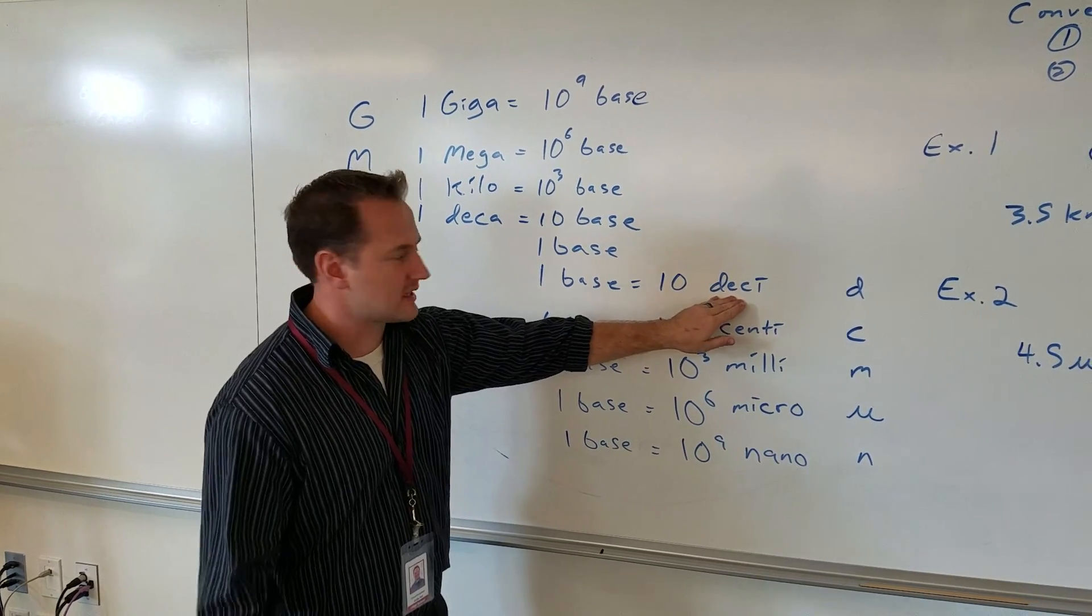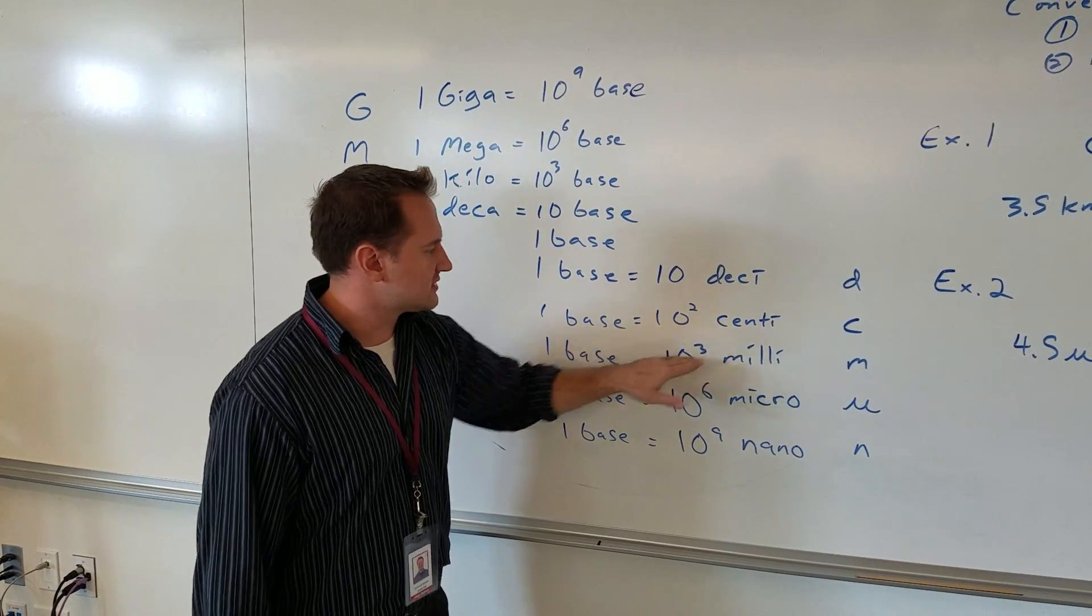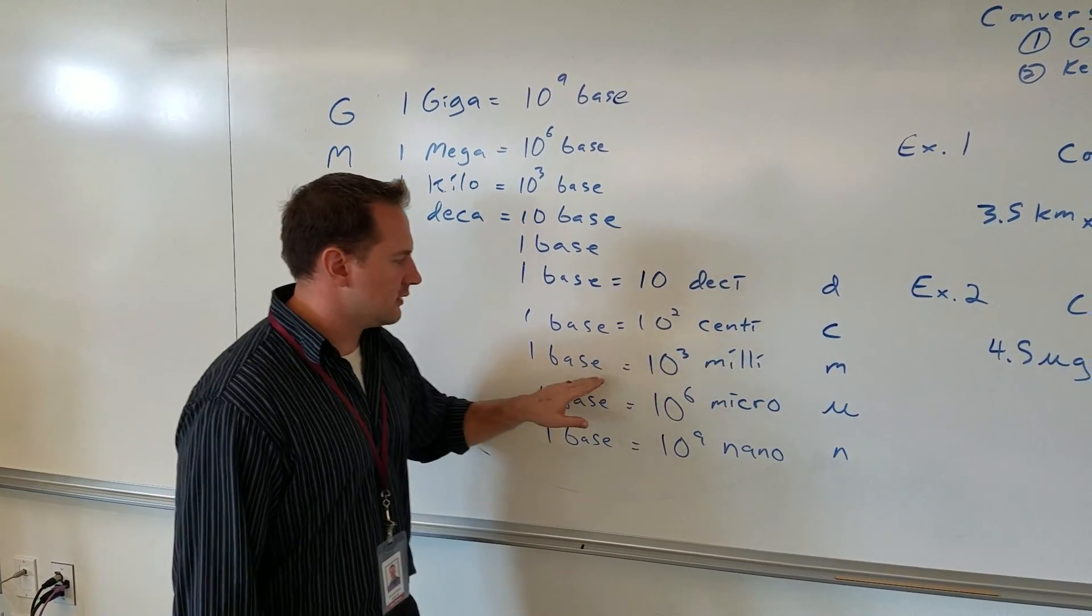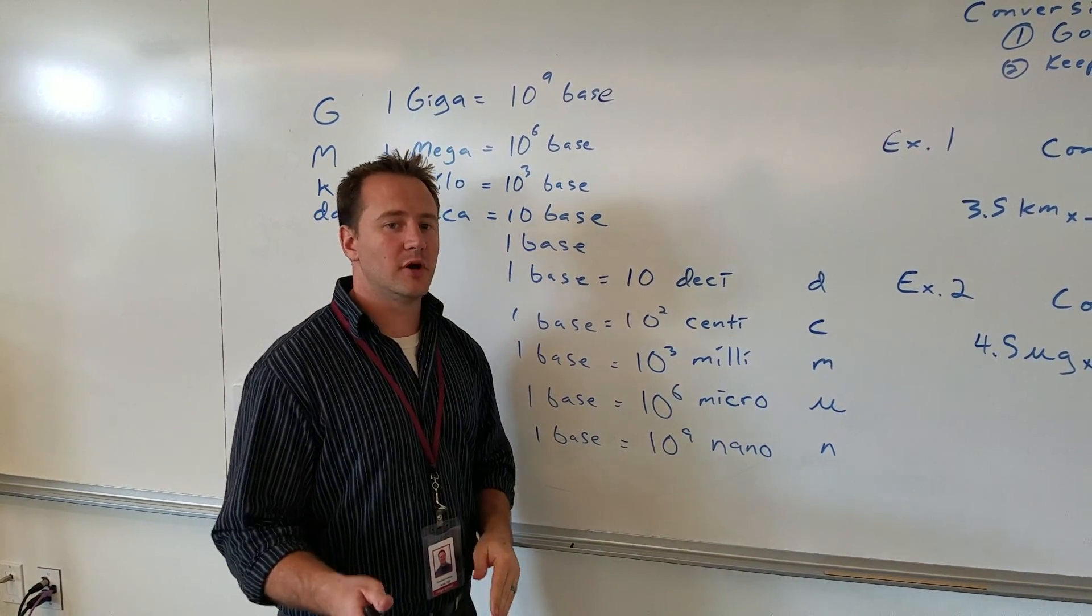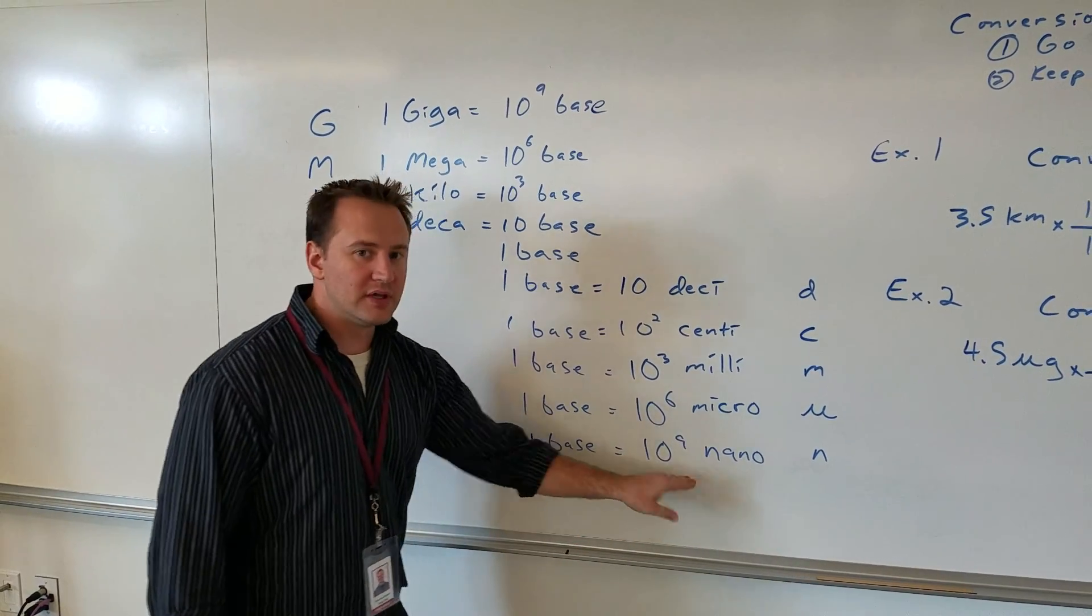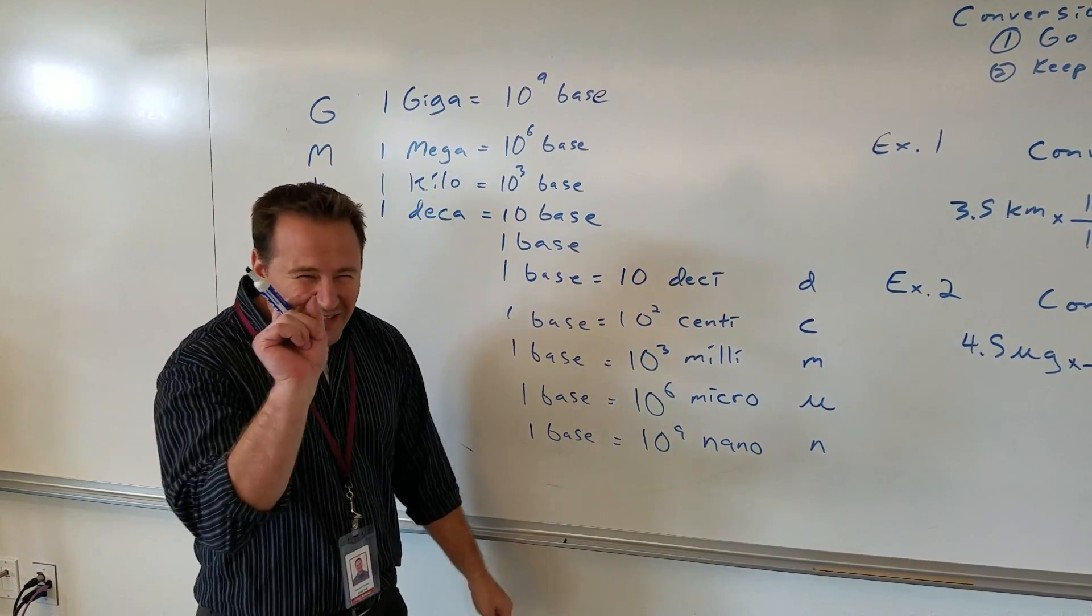If we're talking about decimeters, there are 10 of those in a meter. There's 100 centimeters in a meter, a thousand millimeters in a meter, a million micrometers in a meter, and the smallest you need to know is nanometers, which there are a billion nanometers in a meter. It's really small.